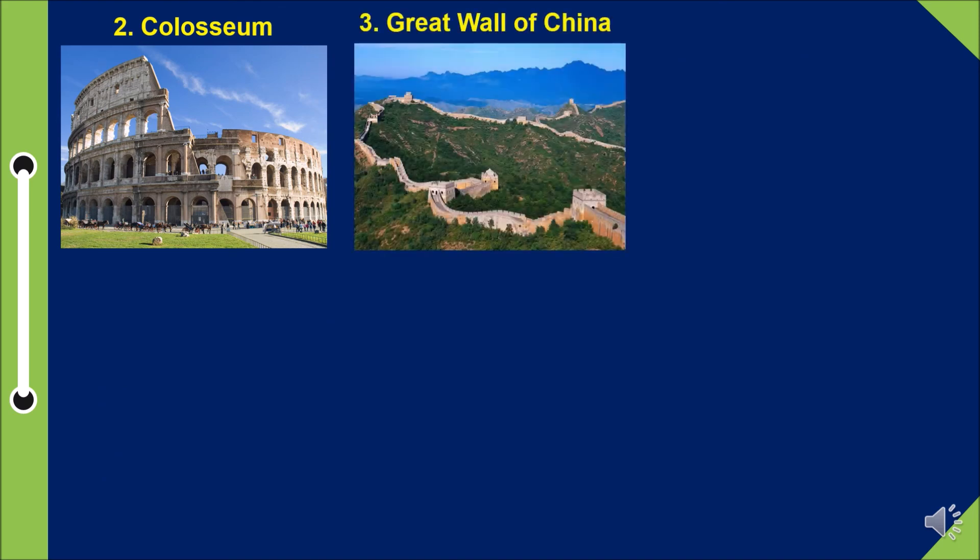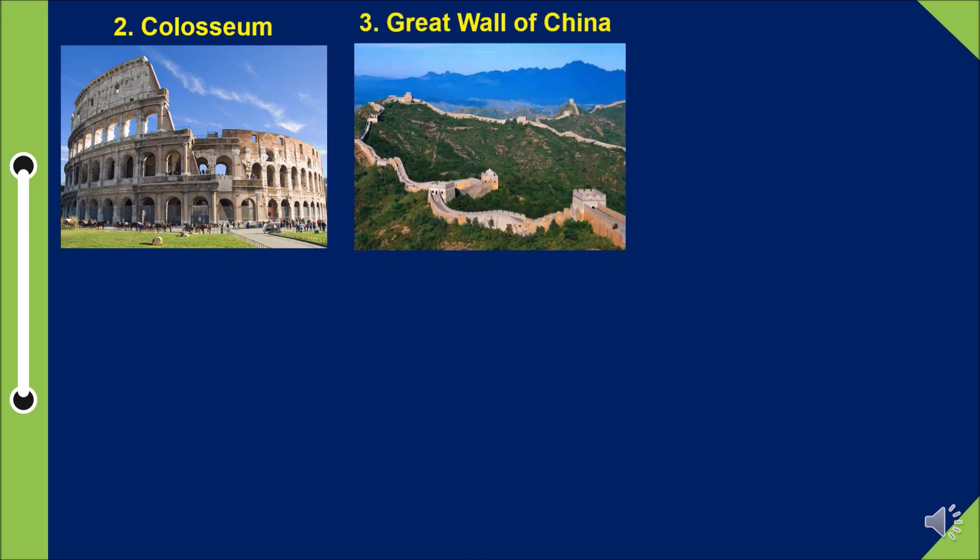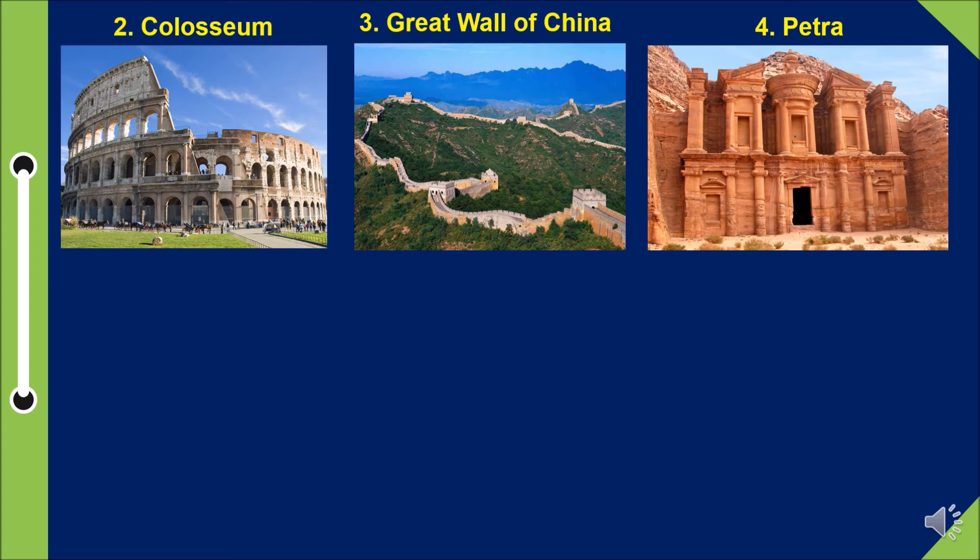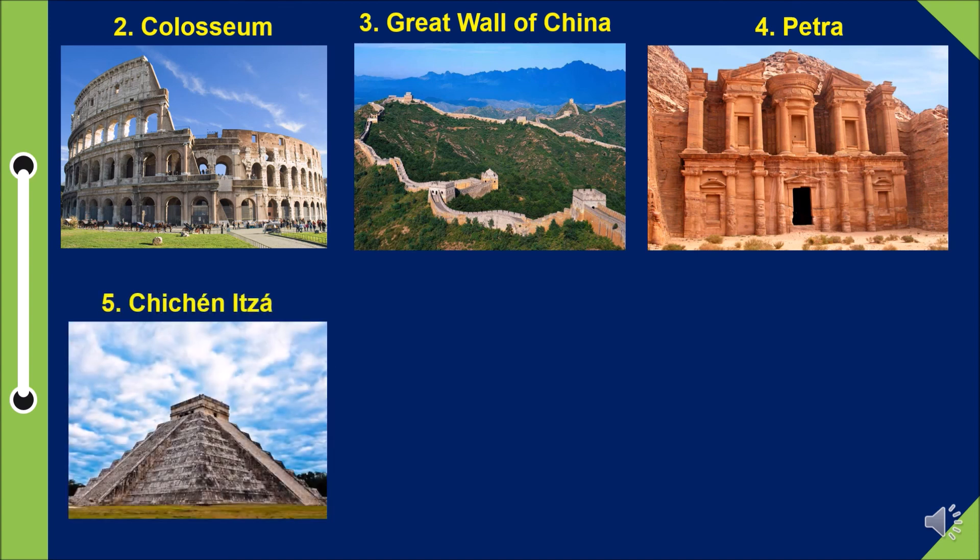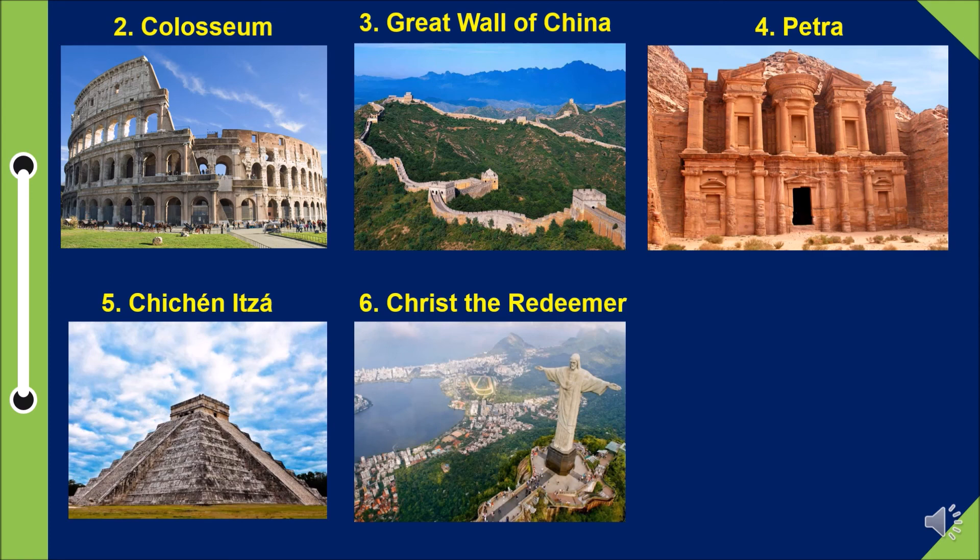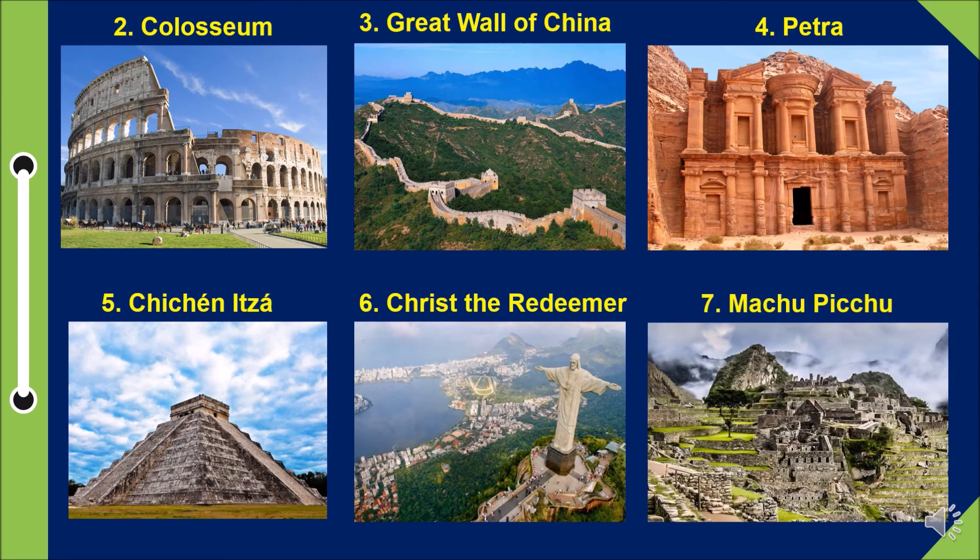Number two, Colosseum. Number three, Great Wall of China. Number four, Petra. Number five, Chichen Itza. Number six, Christ the Redeemer. And number seven, Machu Picchu. These are the seven wonders of the world.